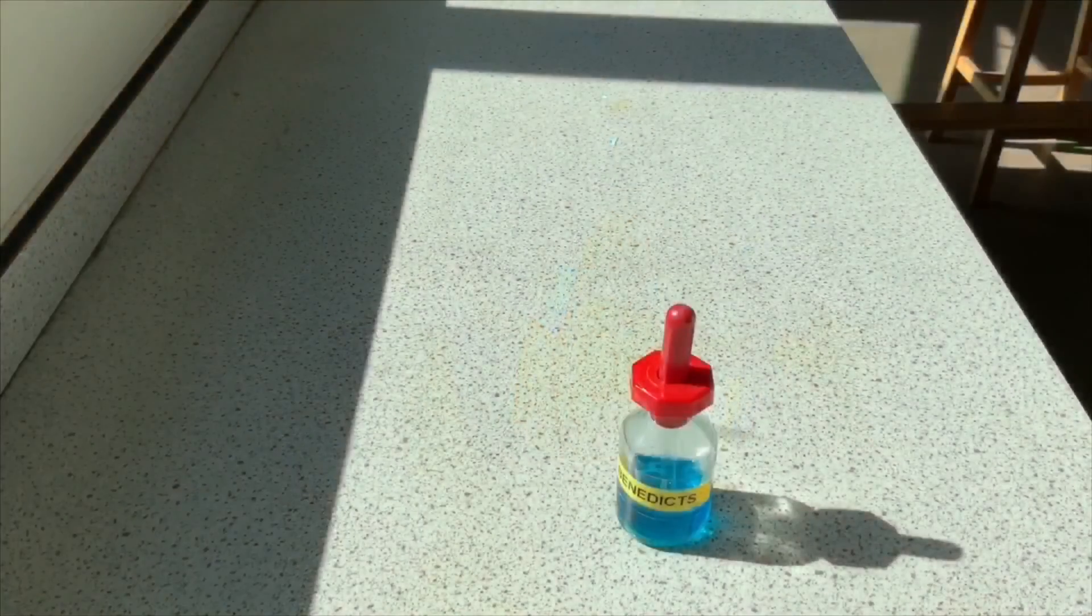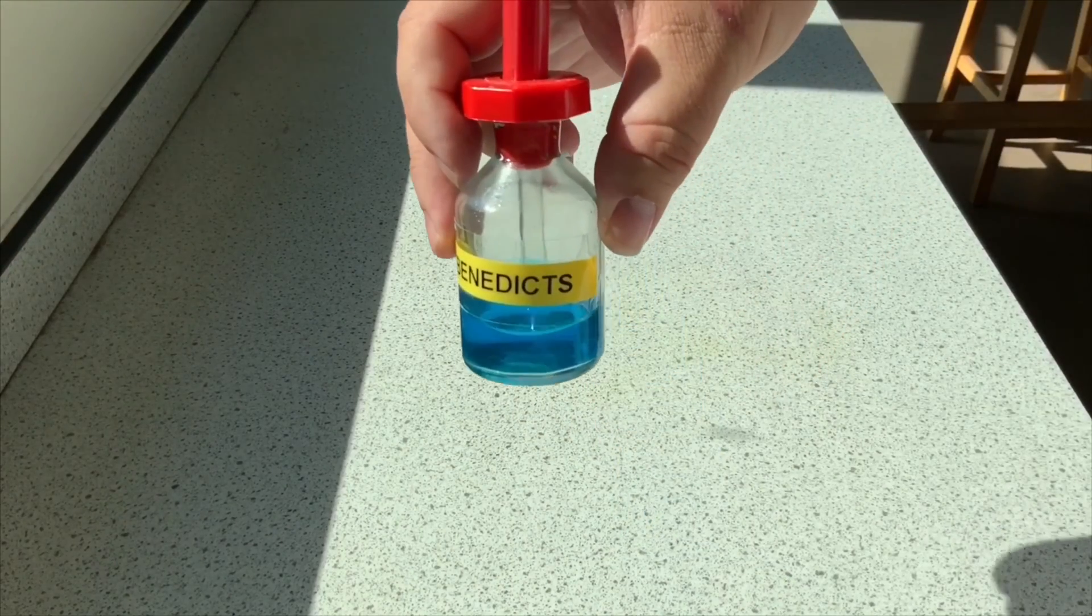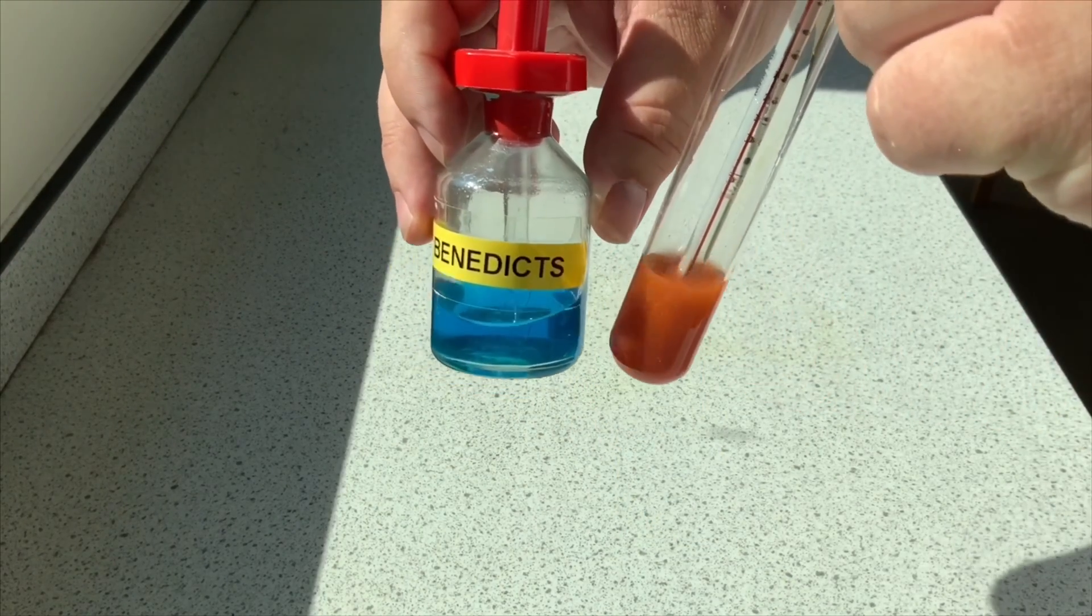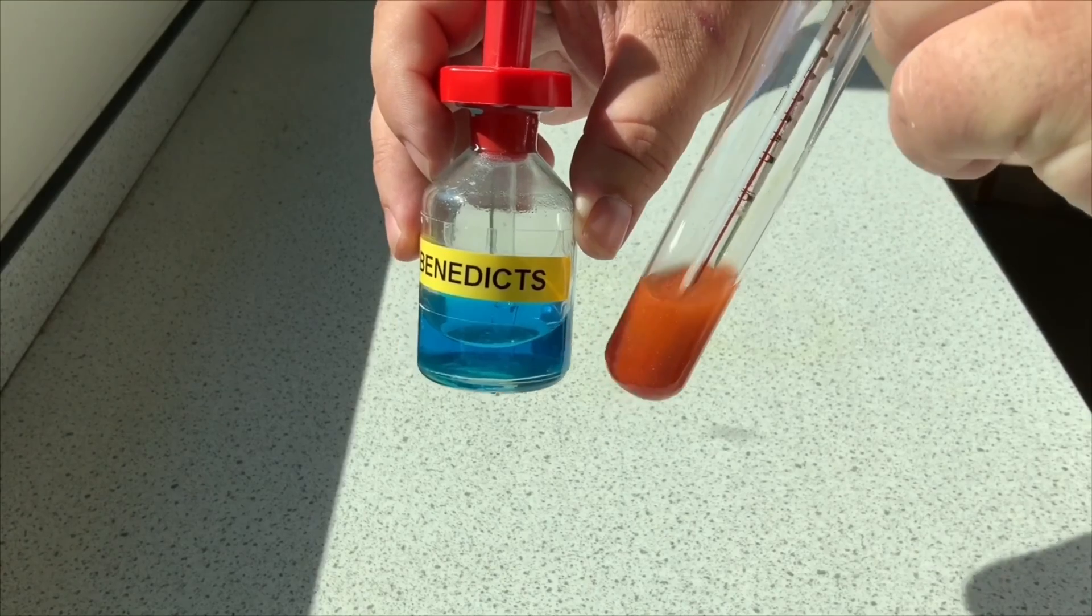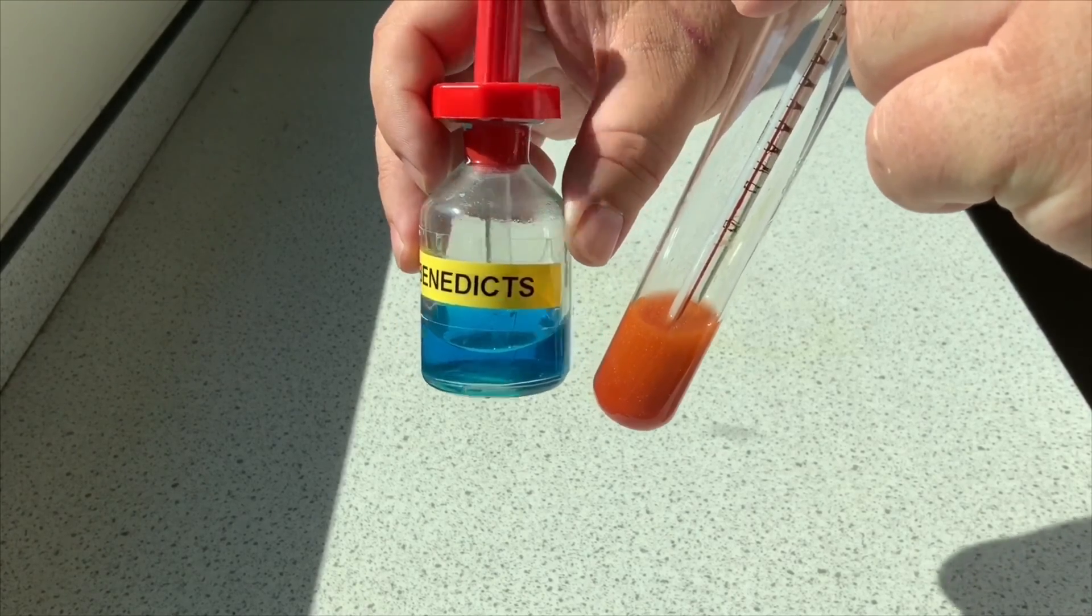We know there's a lot of sugar present because we put a lot of glucose inside. So that's the color of Benedict's, and if you look at the boiling tube over here we can see it's almost like an orangey brick red color.